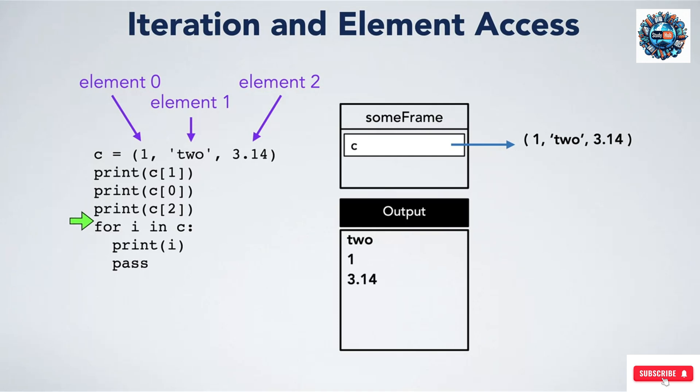We can also iterate over the elements of the tuple with a for loop. The for loop specifies the variable we want to use for each element, so we create a box for it. It also specifies the tuple that we want to iterate over. We start at the first element of this tuple, which is the number 1, so the variable i is currently 1. We go inside the loop and do its body, which prints i. Now we reach the end of the loop, so we go back to the top and set i to the next element, which is the string two. We do the body of the loop again, and go back to the top for the next element. We do the body again, and are now done with the loop as we have iterated over the entire tuple.